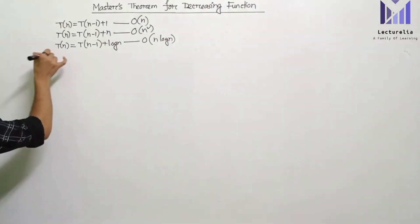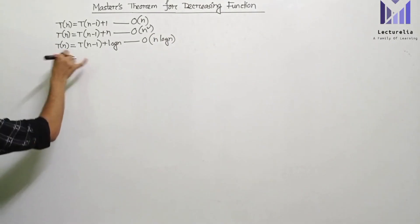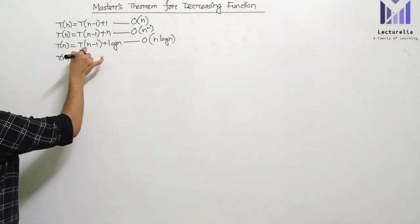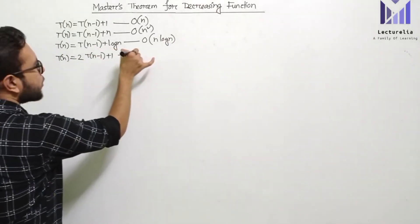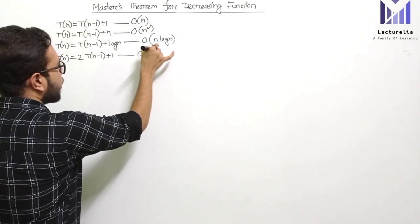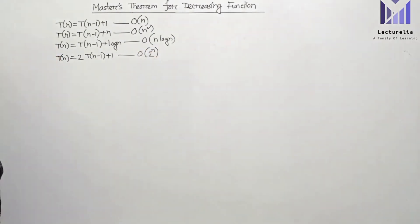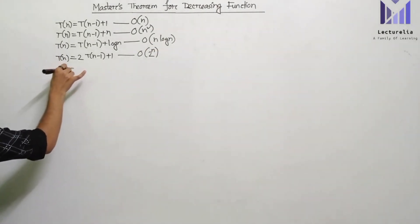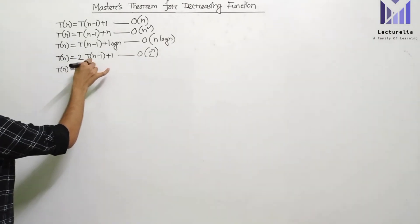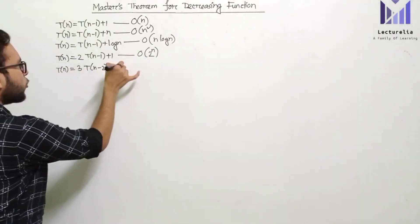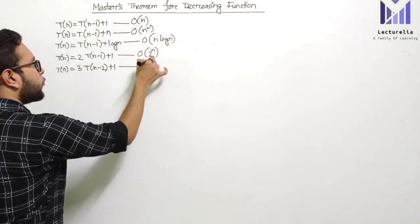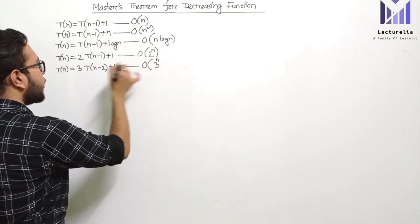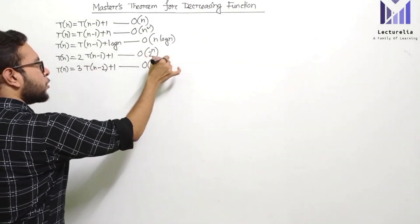In another lecture video, the recurrence relation was T(n) = T(n-2) + 1, and we found the time complexity to be order of n divided by 2.